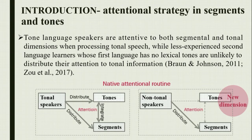The differences between native and non-native listeners become more significant when conducting a high memory-demanding task. For example, when perceiving a speech sound, tonal listeners may pay simultaneous attention to both segmental and tonal dimensions, integrating the two aspects. Non-tonal listeners might find it hard to allocate attention to the tonal dimension because they lack sensitivity towards tones. In other words, tonal and non-tonal listeners may use totally different attentional routines in the perception of segments.